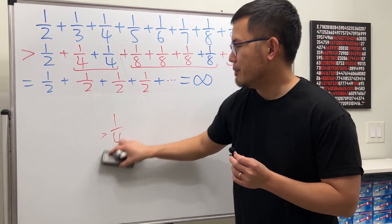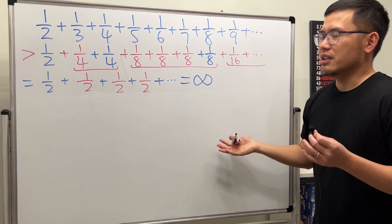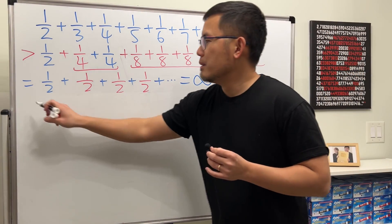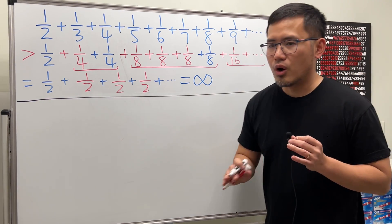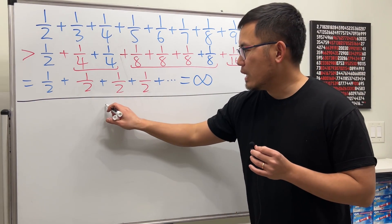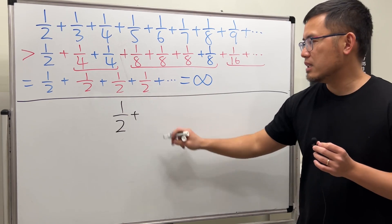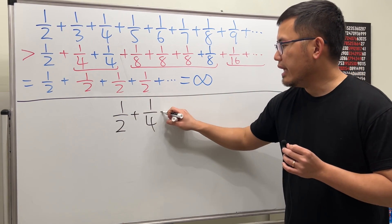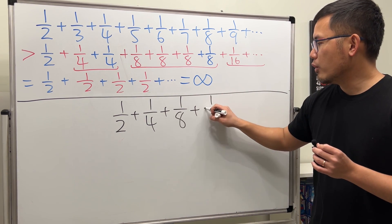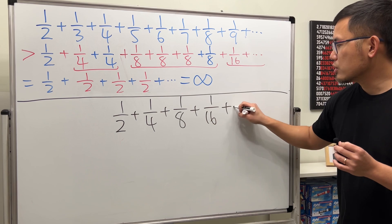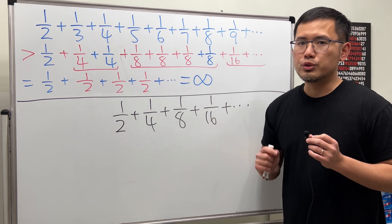Now, we'll just keep adding fractions — shouldn't we just get infinity regardless? But check this out: it does not happen like that all the time. If instead we only have 1 over 2, and then we add it with 1 over 4, and then 1 over 8, and then 1 over 16, and so on — this right here is an example of a geometric series.